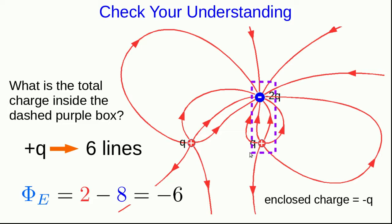So you can try a surface like this, or you could do a weird-shaped surface like this. And although the number of lines out and in will differ for these different surfaces, you're always going to come up with a total flux of negative six, no matter what surface you draw, as long as it encloses these two charges.